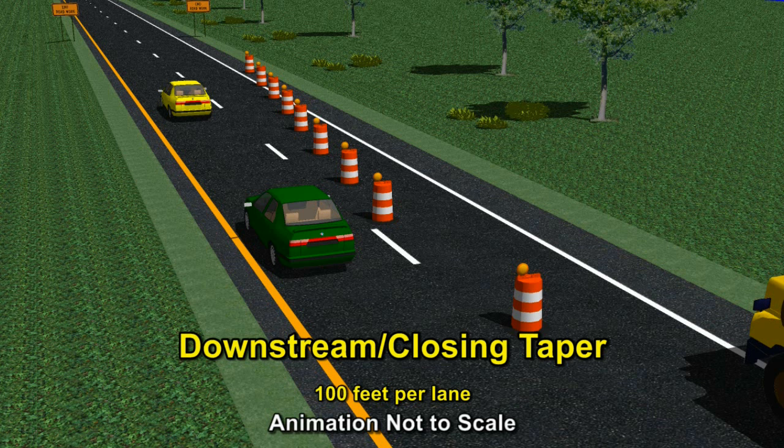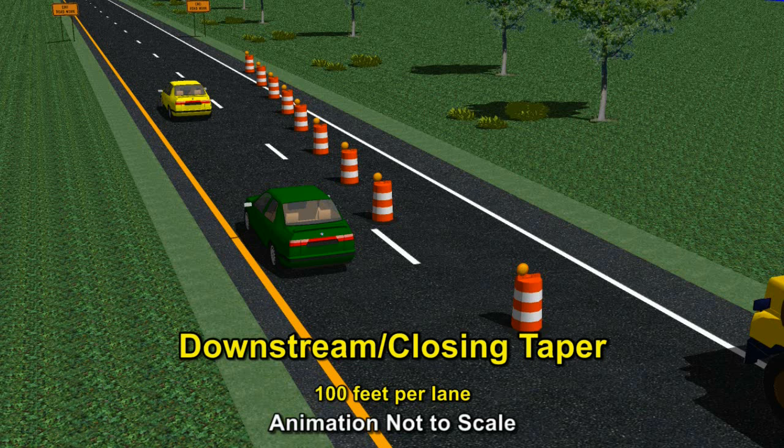A closing taper is used at the downstream end of the work to allow drivers back into the lane that was closed. It's placed in the termination area. While closing tapers are optional, they may be useful in smoothing traffic flow. However, they may not be advisable when material trucks move into the workspace by backing up from the downstream end. If the closing taper is used, it should be 100 feet in length per lane.